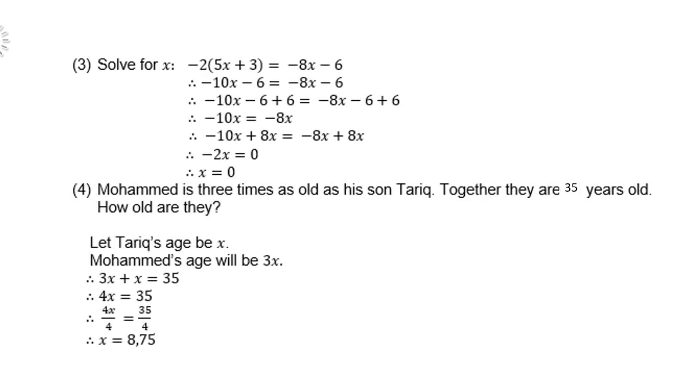Let's look at number 3, solve for x. Now we have an equation with brackets. So we first have to remove the brackets. Or alternatively, you can divide both sides by -2. You can choose. So, but here I multiply -2 times 5x is -10x. -2 times 3 is -6.